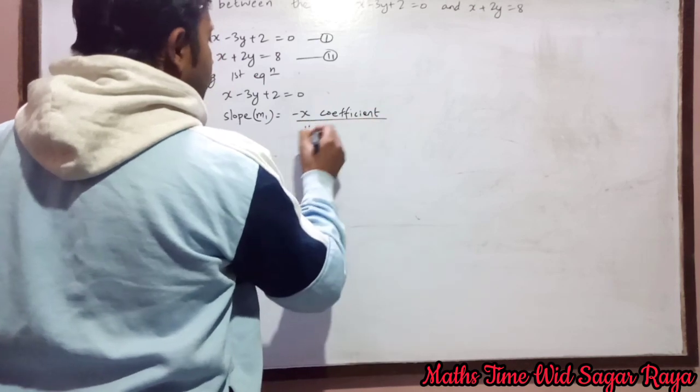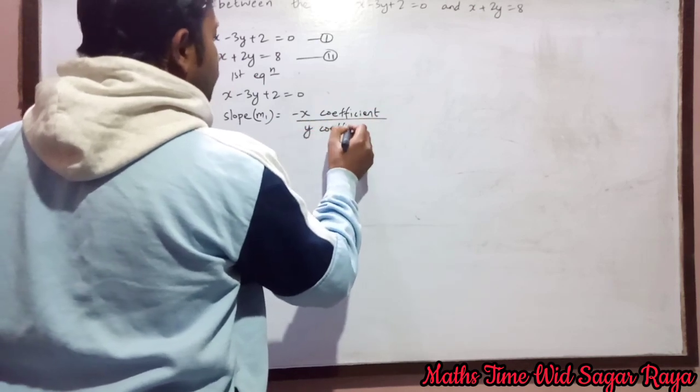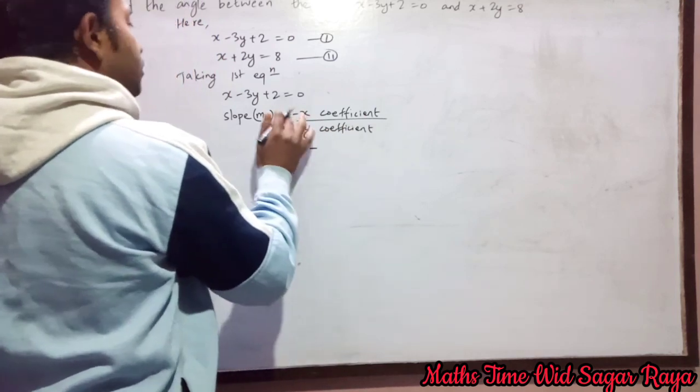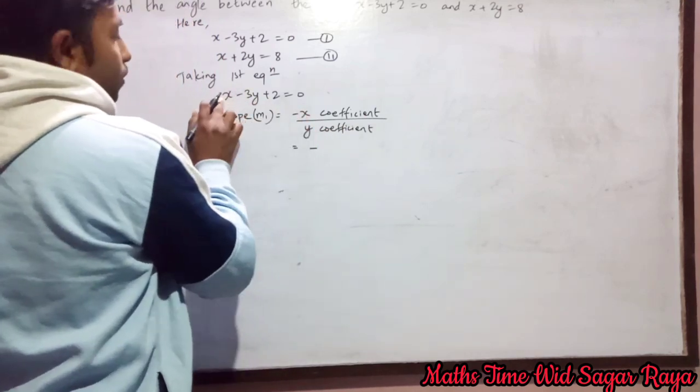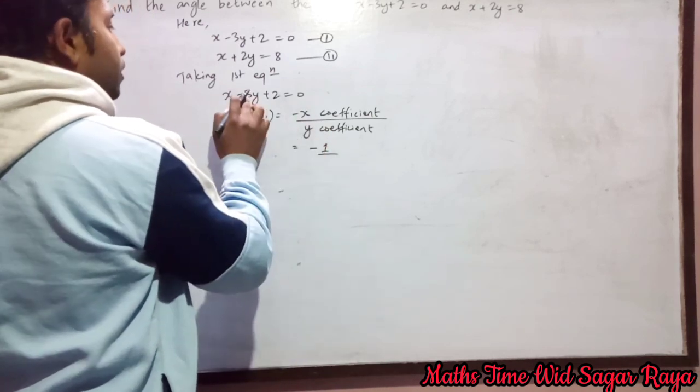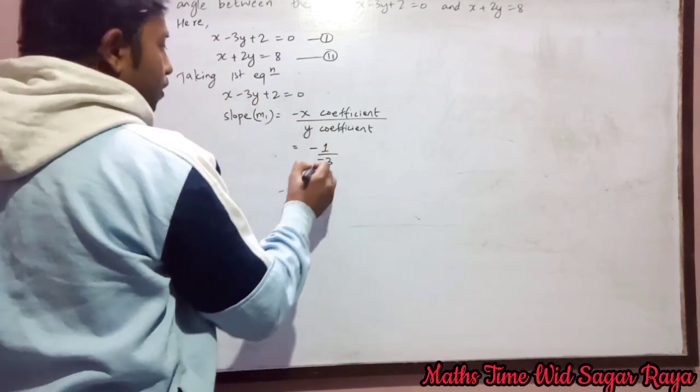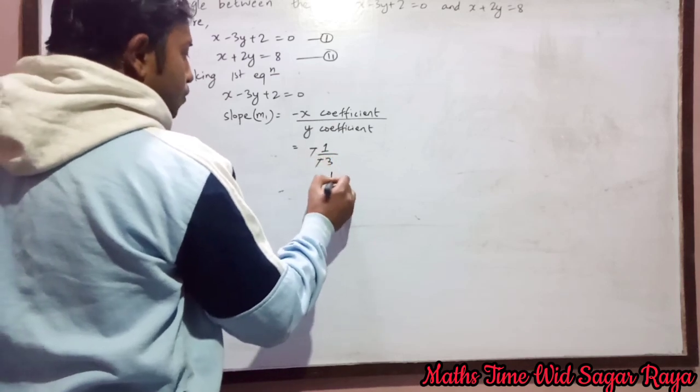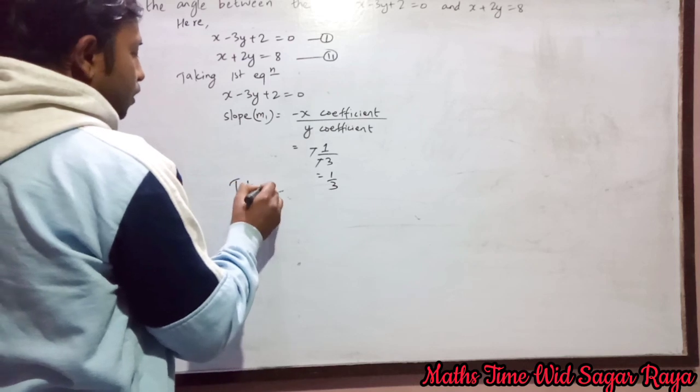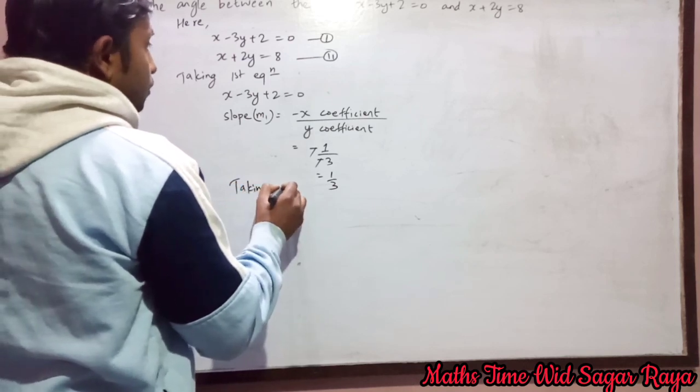So minus x coefficient means here it is 1, and y coefficient is here minus 3, so 1 by 3. And then let's take second equation.